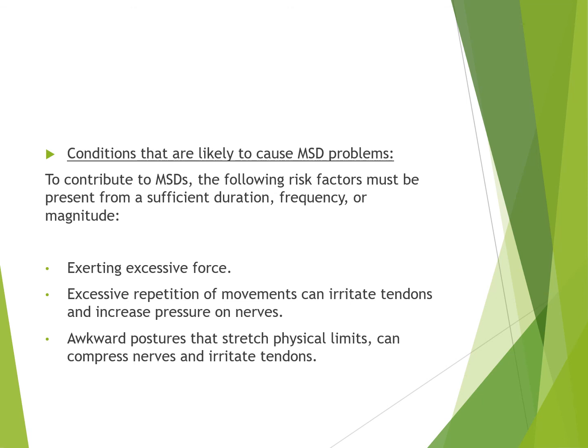أيه الحاجات اللي بتخلي الـ musculoskeletal disorders تحصل؟ لو هو بيشيل حاجة تقيلة جداً وبيعمل force كبيرة - عشان كده قلنا الشنطة ما تزدش عن وزن معين. أو إنه بيـ repeat نفس الحركة كتير كتير فبيعمل strain على التندن والنيرف. أو وضع معين بيـ compress النيرف. أو إنه بيمد إيده جامد عشان يجيب حاجة بعيدة فبيـ stretch التندن والنيرف وبيكمبرس الحاجات دي.